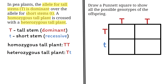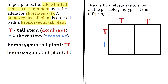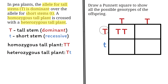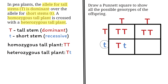Now it's time to fill the Punnett square. In every box, we take one allele from the top and one from the left and bring them together. For the first box: capital T from the top and capital T from the left. For the second box: also capital T from the top and capital T from the left. For the third box: capital T from the top and lowercase t from the left. And for the fourth box: capital T from the top and lowercase t from the left. This is the completed Punnett square.